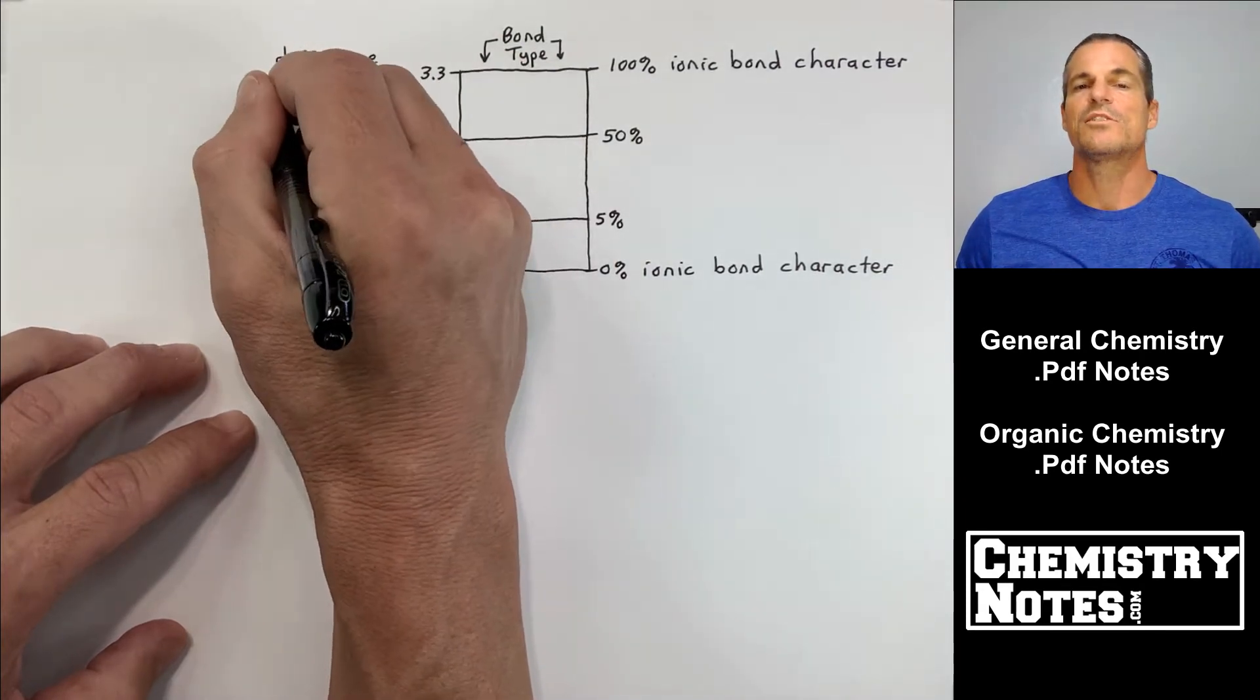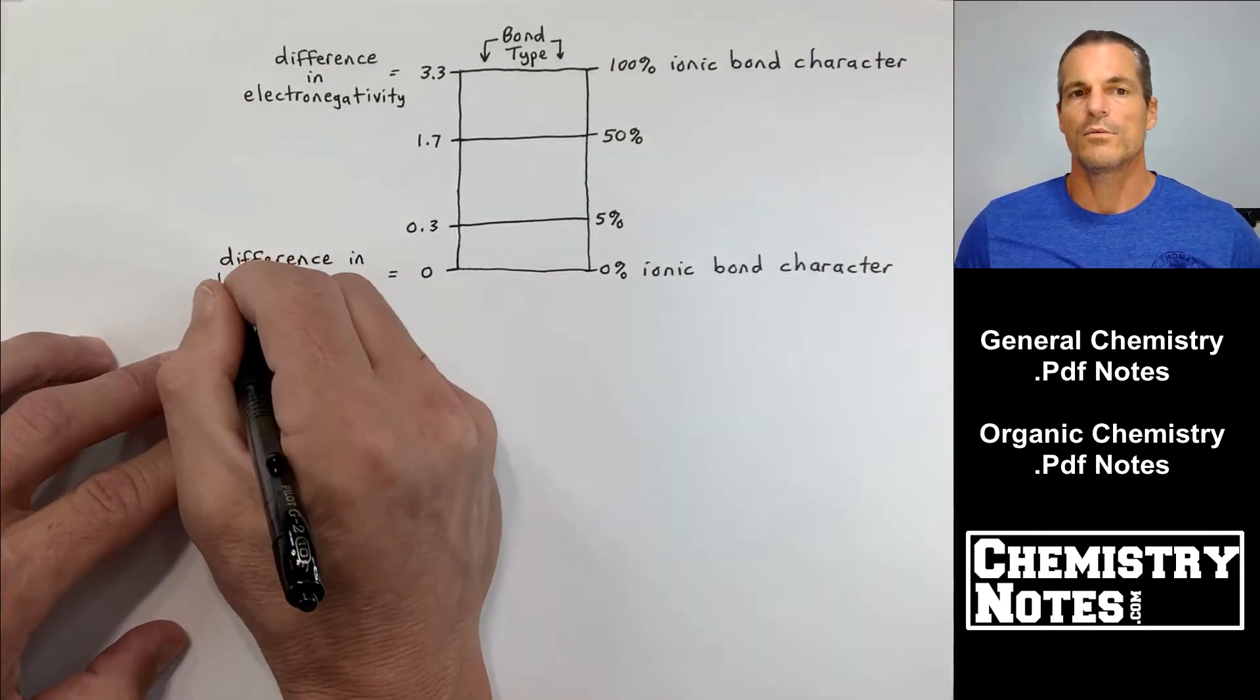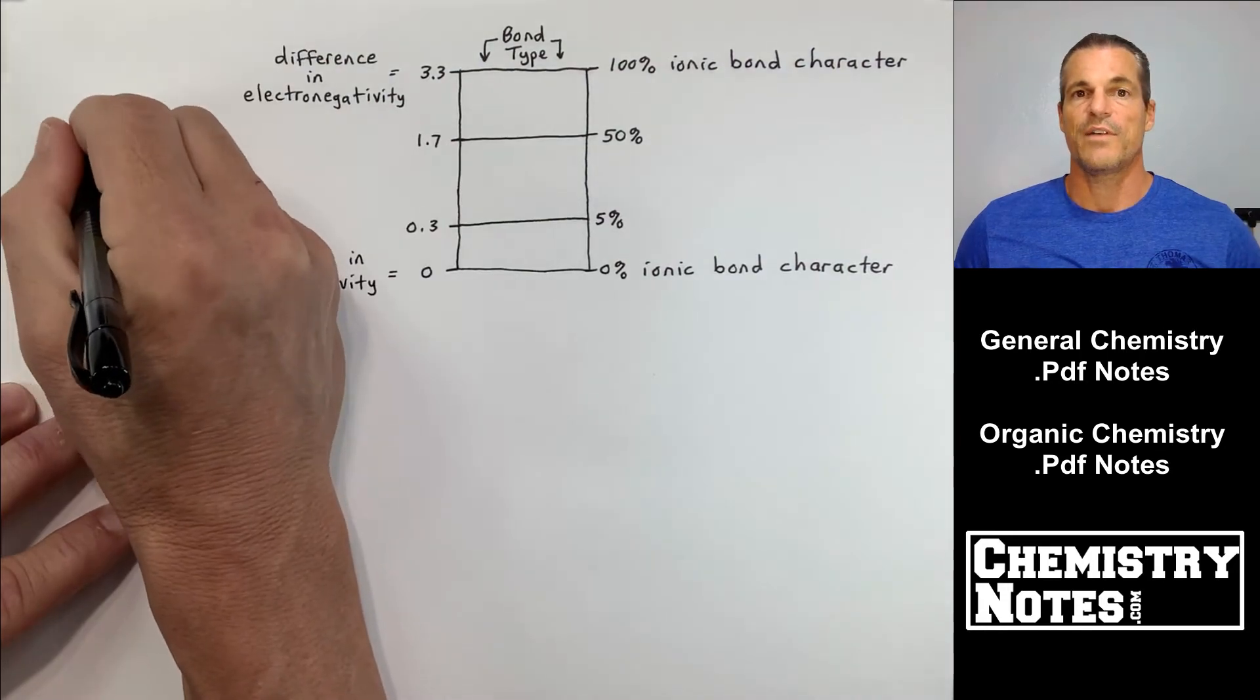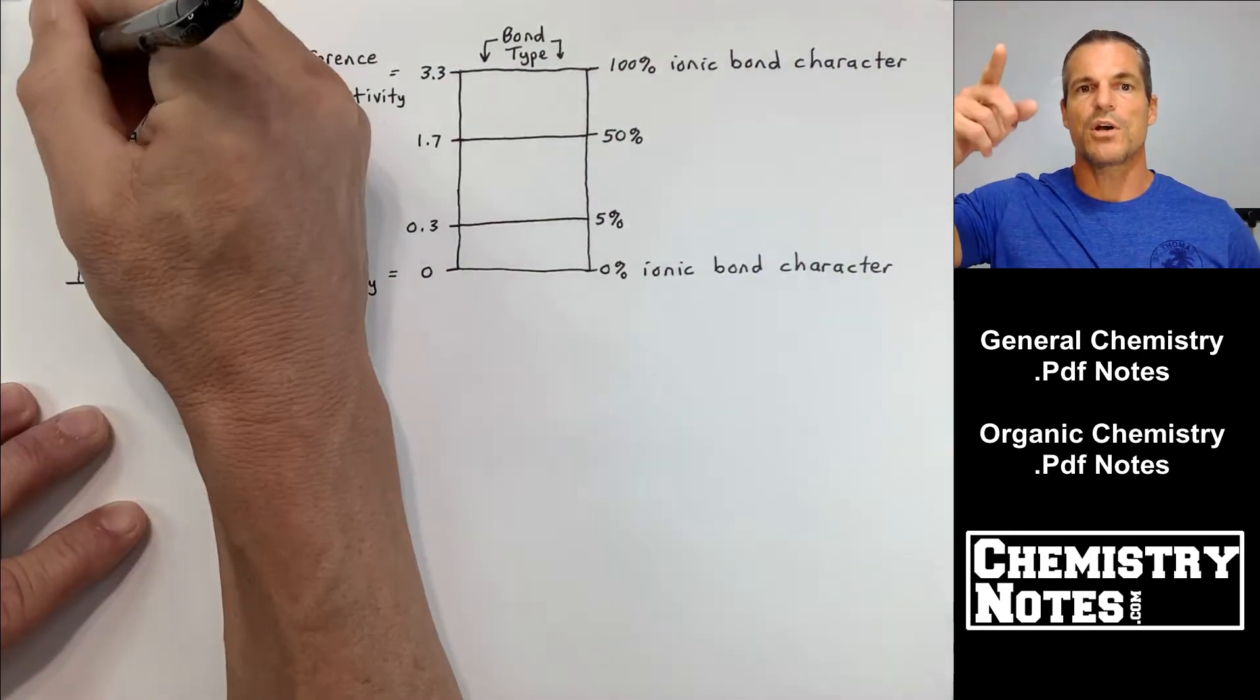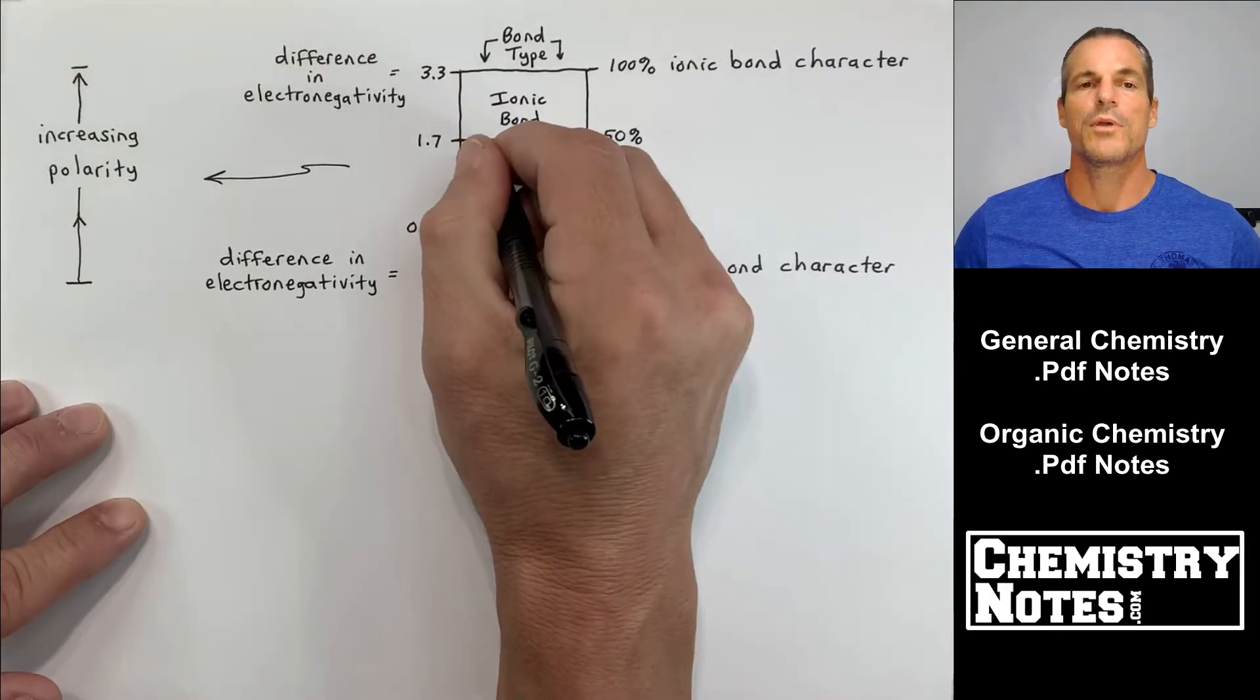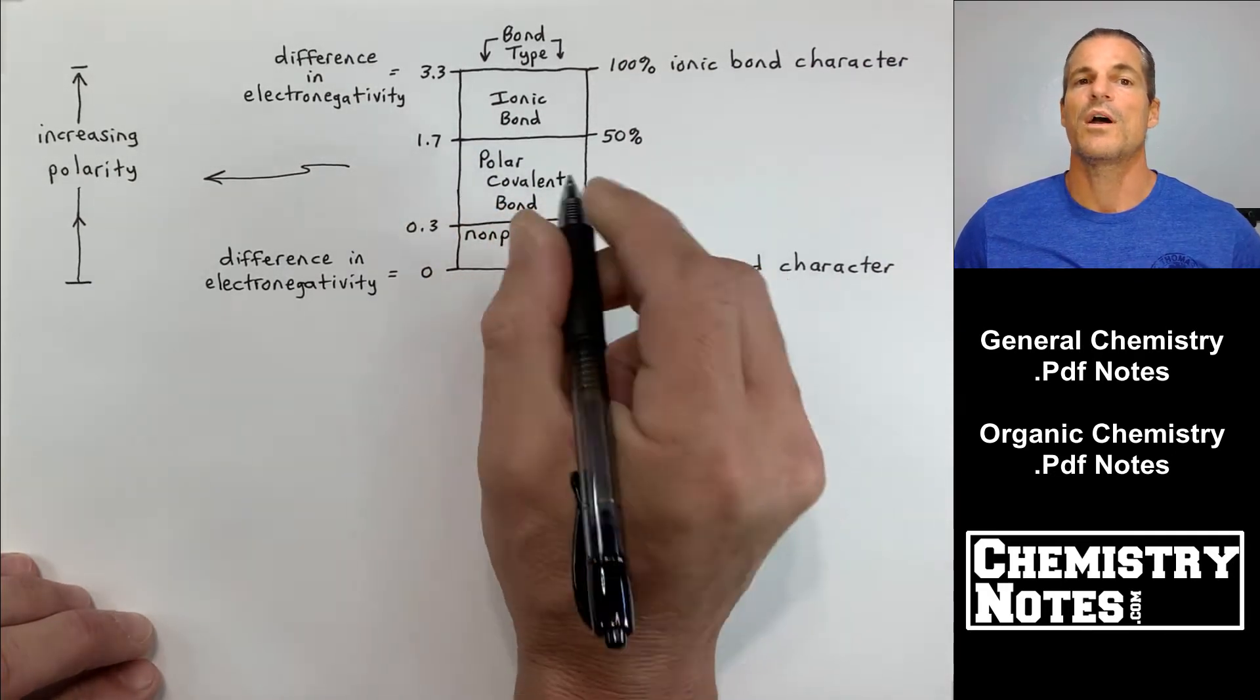All the way at the top is a hundred percent ionic bond character. All the way down at the bottom, zero percent ionic bond character. And then we've got the borders at 50% and 5%. The left hand side, the very, very top is 3.3. That is the biggest difference in electronegativity you can get. And then zero would be a difference in electronegativity between like say two hydrogen atoms or two carbon atoms.